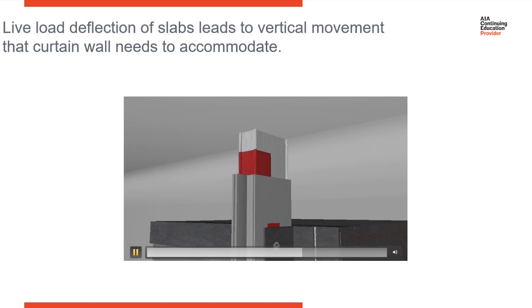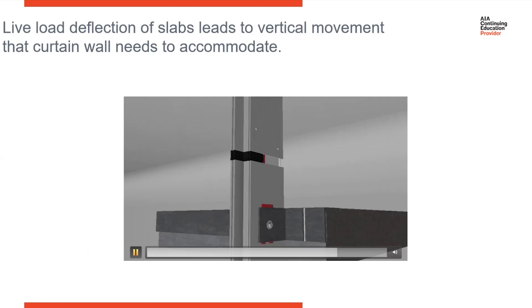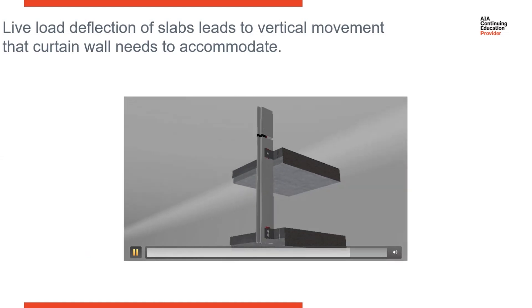Then you have your splice being installed with the mullion coming in on top of it. That splice joint is able to capture vertical movement. Together with splices and the wind-load anchor, a curtain wall system can accommodate vertical movement from the slab.